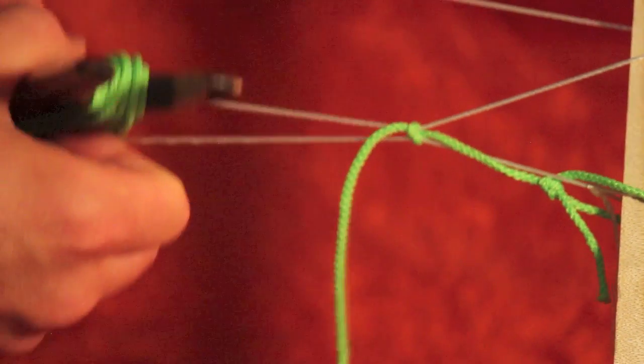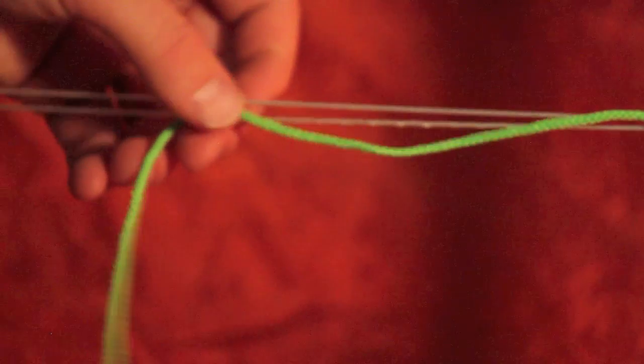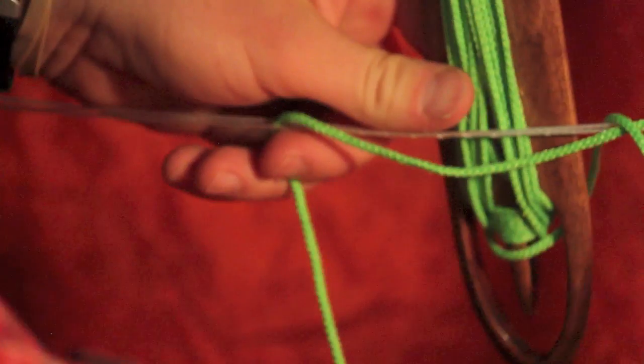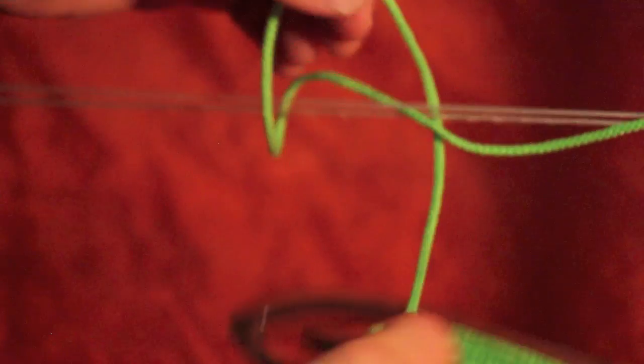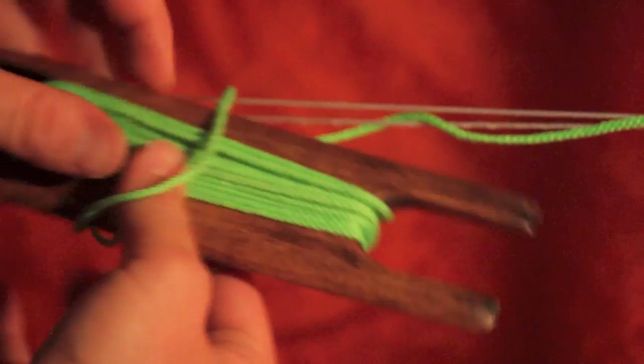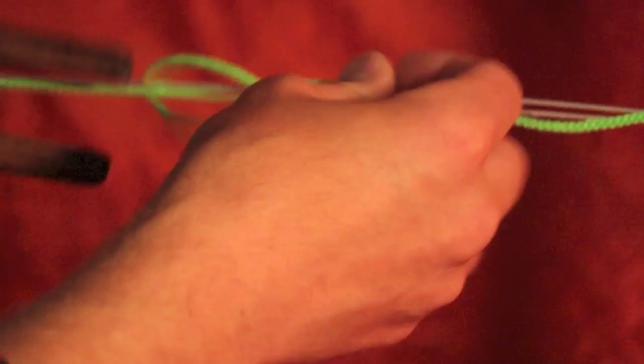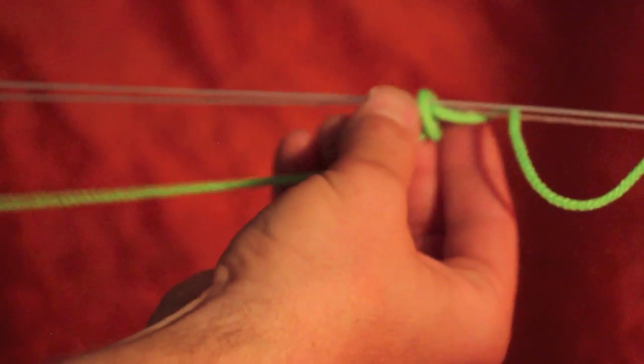Then I'm going to continue that pattern. I'm going to go around the back side of the bottom line, around the two and then through. Tied a knot. Then dress it up.